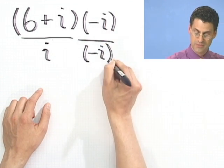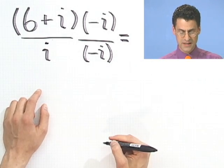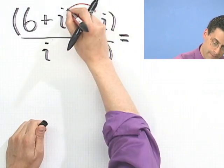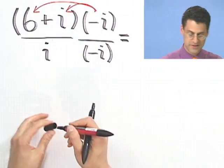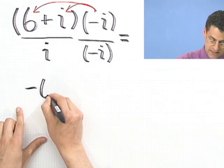So the conjugate of i is actually minus i. And if I do that, what do I see? Well, I have to distribute now. Everything has to get hit with that thing. You don't need to FOIL now because it's such a simple thing on top. So I'd see a minus 6i.